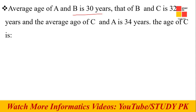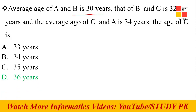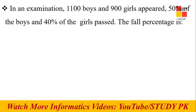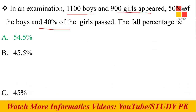Next question: The average age of A and B is 30 years, B and C is 22 years, and C and A is 34 years — the age of C is how many years? The answer is 36 years. Next question: Complete the sequence 6, 11, 27 — the answer is 28.